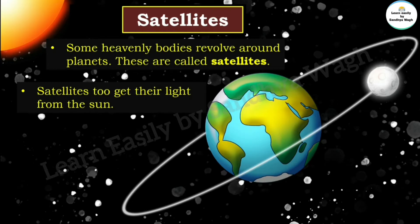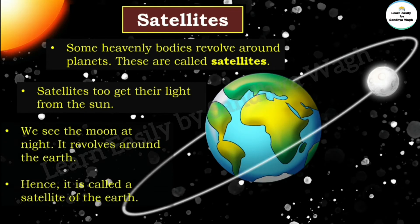Satellites get their light from the sun. We see the moon at night; it revolves around the Earth, hence it is called a satellite of the Earth.